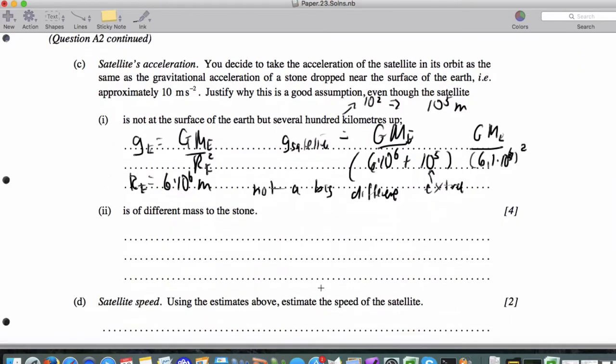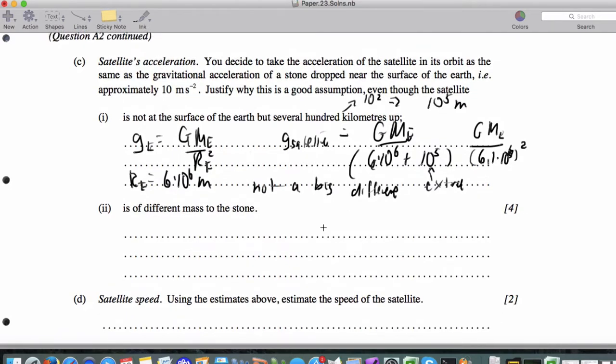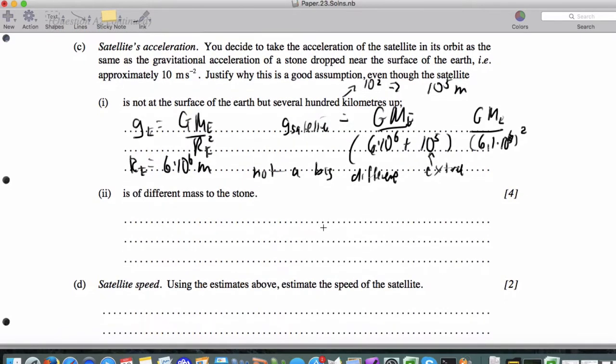And then, for 2, it says is of a different mass to the stone. And there, it's just that idea that GMM over R squared equals M times A. And what we're saying is that acceleration is independent of the satellite mass.